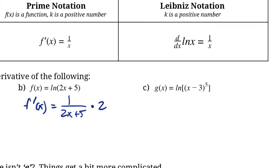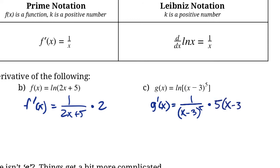This one looks a little more complicated: we have ln(x minus 3) all to the 5th power. Using the chain rule, g prime of x is going to be 1 over (x minus 3) to the 5, times the derivative of (x minus 3) to the 5, which is 5(x minus 3) to the 4. This is a chain rule inside a chain rule, and the derivative of x minus 3 is just 1. This simplifies nicely — there's an (x minus 3) in the numerator and denominator, giving us 5 over (x minus 3).